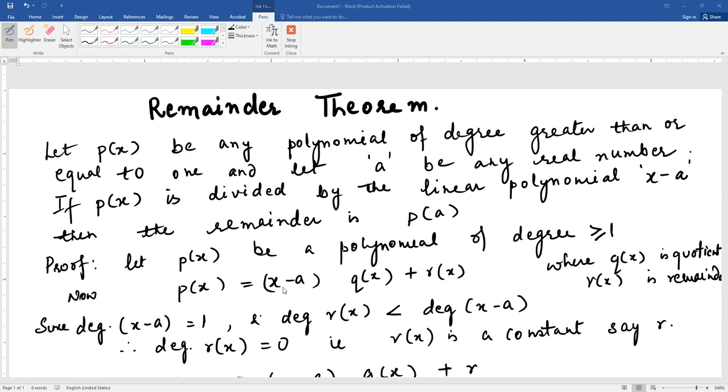Now since the degree of x minus a is 1, the division rule says that we continue division until the remainder's degree becomes less than the divisor's degree, which is x minus a. So the remainder's degree is less than one, which means the degree of the remainder is zero.